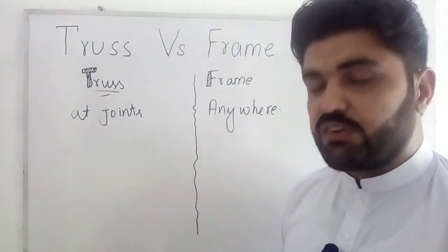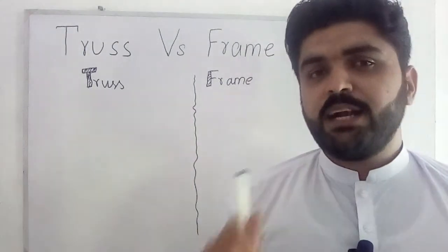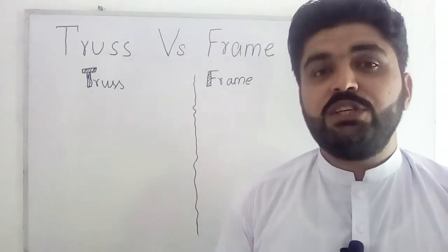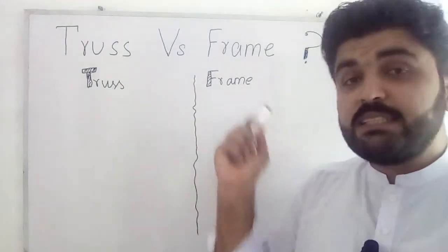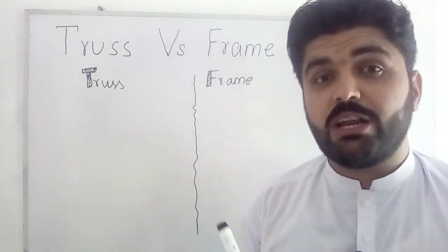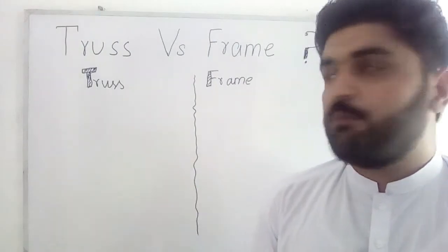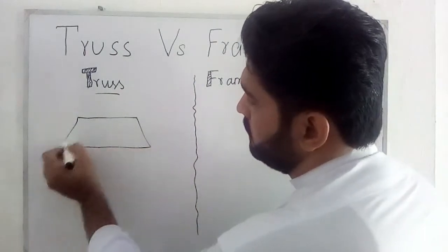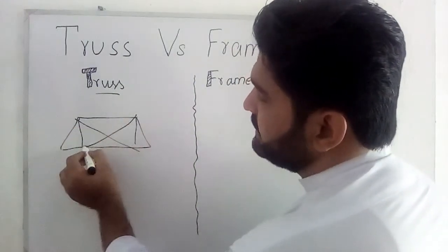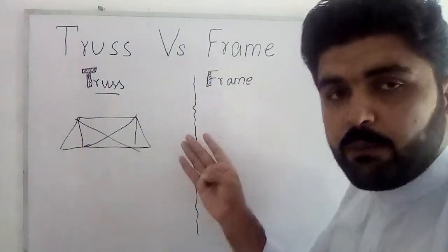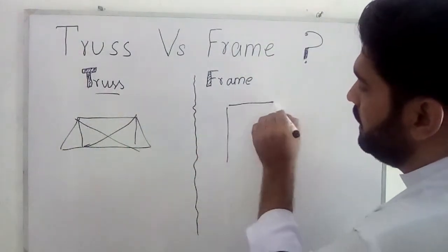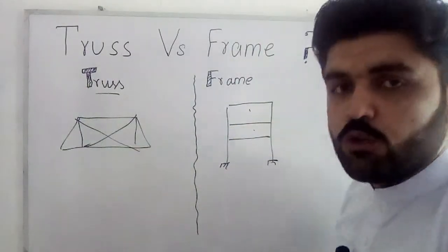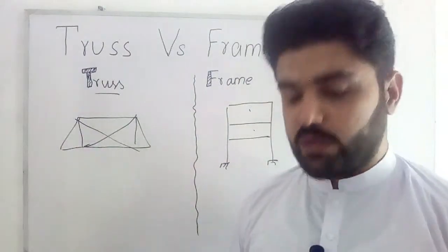The third important difference between truss and frame is that the truss consists of a triangular shape, while the frame consists of a box shape — like a rectangular shape or a square shape. So this is our truss and it consists of a triangular shape, while the frame will consist of a box shape like this. This is the third difference between truss and frame.